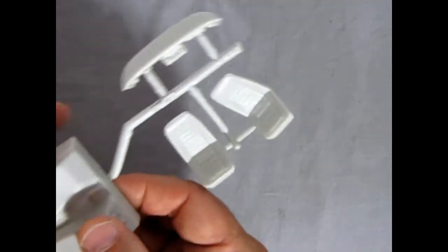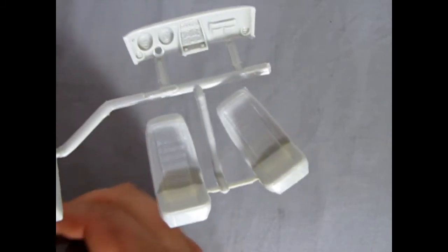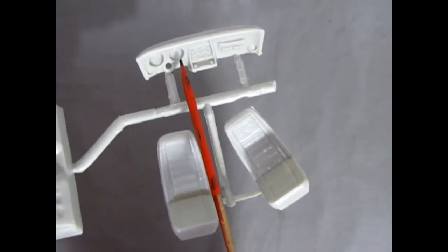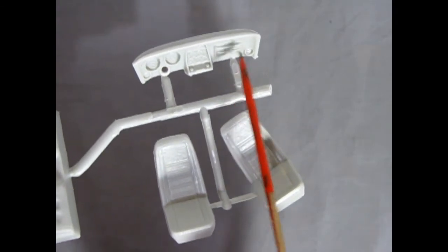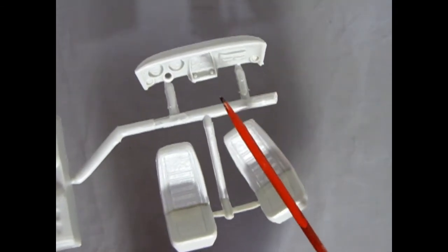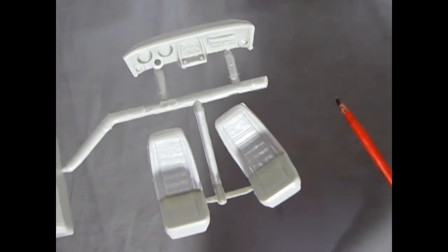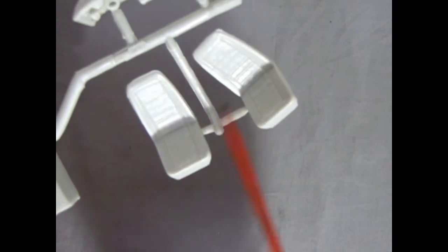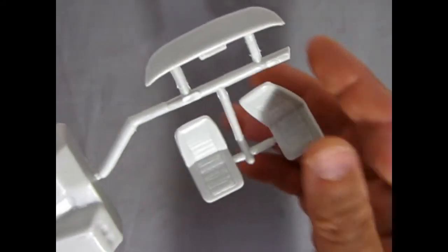And you can see all that nice detailing inside there. We have our dashboard with the big sunken-in gauges, and our map pocket here. And then we've got our radio for when you want to listen to I Love the Music or SOS. And then of course our seats with the nice upholstery pattern in there.